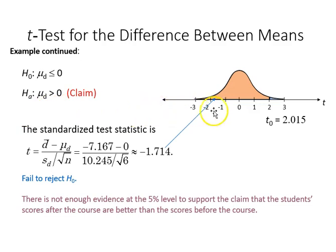Continuing the example, we then calculate our test statistic, and plugging in the values from before, we come to negative 1.714, and that is definitely not in the rejection area. There's not enough evidence at the five percent level to support the claim that the student's scores improved as a result of going through the program.